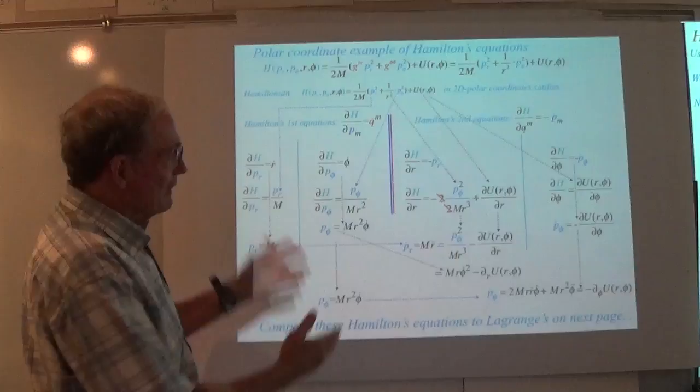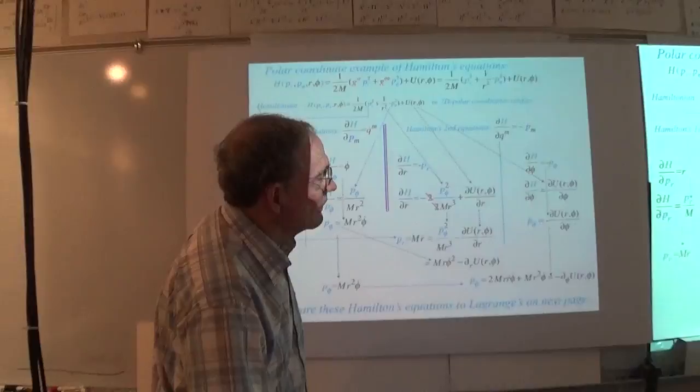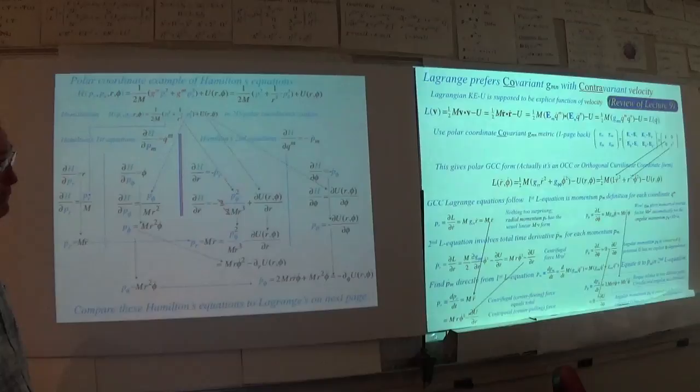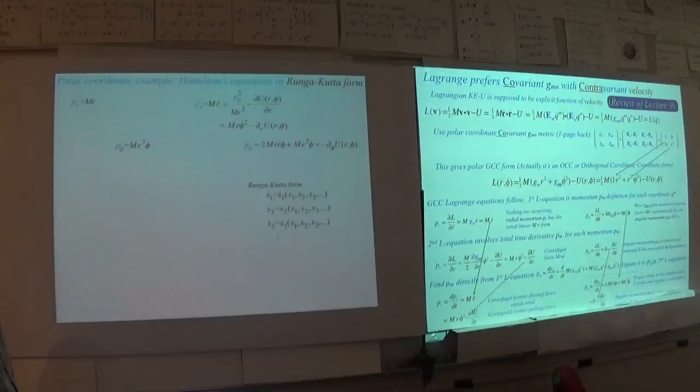We go through all of this stuff and come up with what Lagrange gave us rather quickly in the preceding lecture. But I do want to point out that if you organize these things nicely in the Runge-Kutta form — the fourth-order Runge-Kutta — if you're going to solve differential equations with lots of variables, you just plug these into a program that has the Runge-Kutta integration.